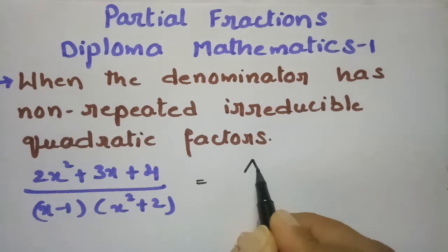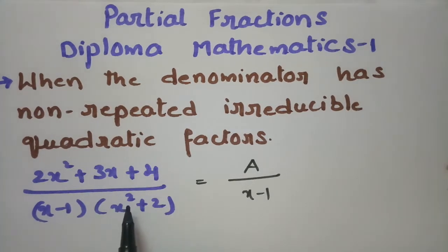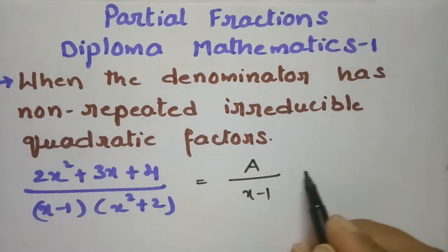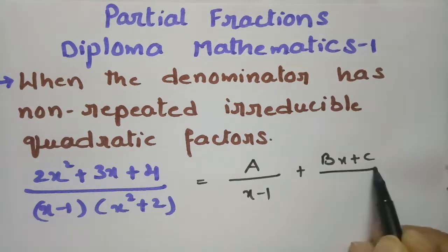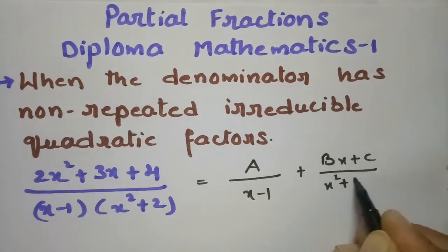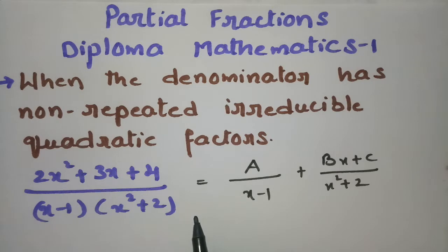For the linear factor (x − 1) we take one constant A/(x − 1). Here x² + 2 is an irreducible quadratic factor — there is a square inside. So we take the combination Bx + C divided by x² + 2. If it were repeated two or three times outside, we would take single A, B, C in the numerator with denominators at power 1, power 2, power 3.